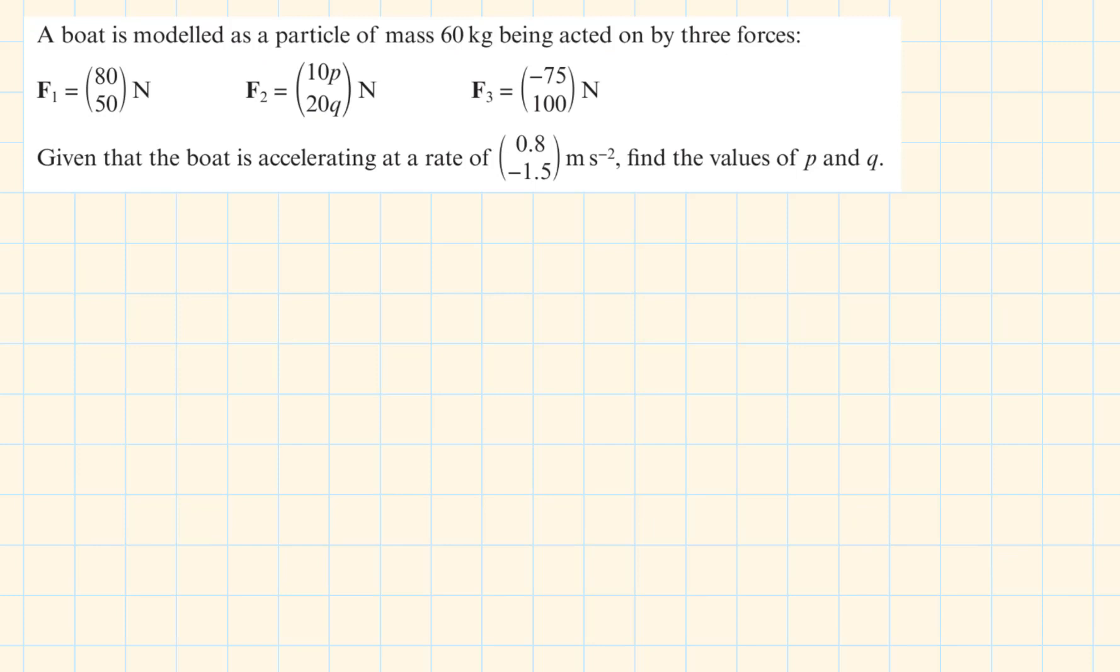And final example. A boat is modeled as a particle of mass 60 kilograms being acted on by 3 forces. F1 is 80, 50, F2 is 10P, 20Q and F3 is minus 75, 100. We can notice here that the F2 has 2 unknowns, the P and Q. Given that the boat is accelerating at the rate of 0.8 and minus 1.5, find the values of P and Q.